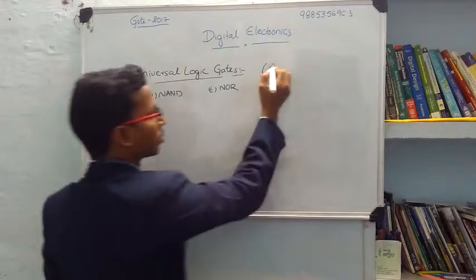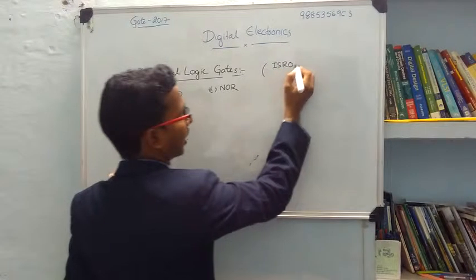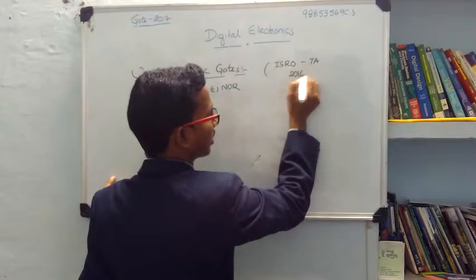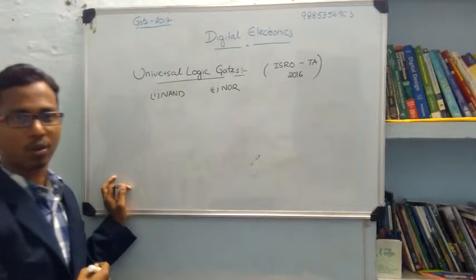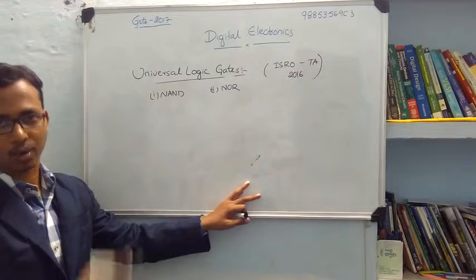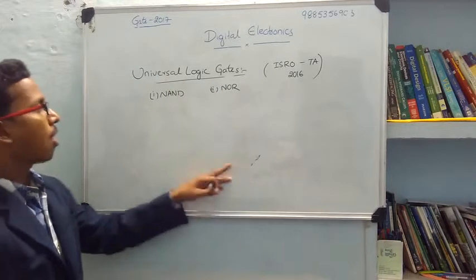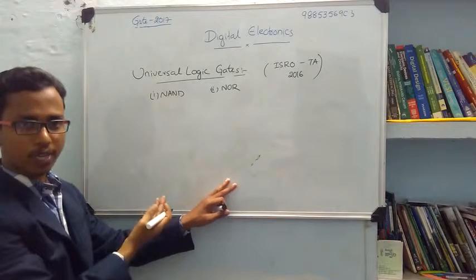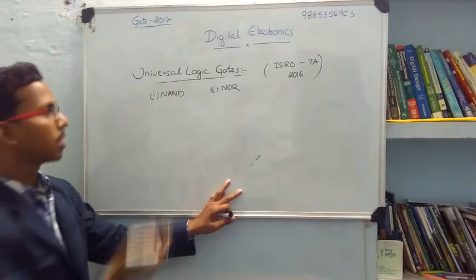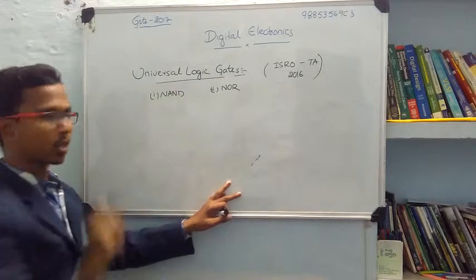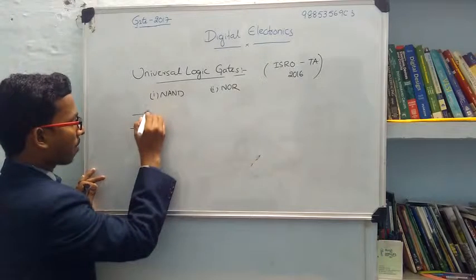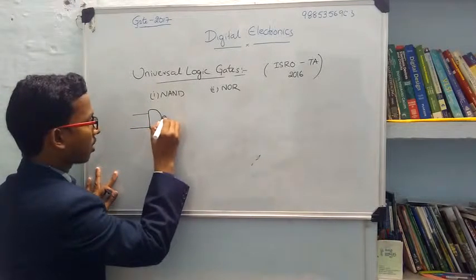Recently, in ISRO 2016 exam for the post of technical assistant held in Bangalore, the question asked was: what are the universal gates? The options were NAND and NOR, AND and OR, NOT and OR. The answer is NAND and NOR — you have to remember that. NAND is formed by using an AND gate and a NOT gate, giving Y equals AB whole bar.